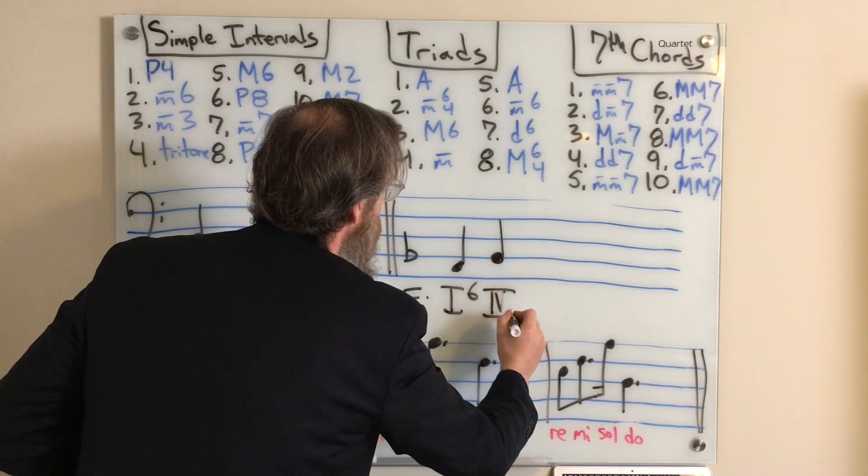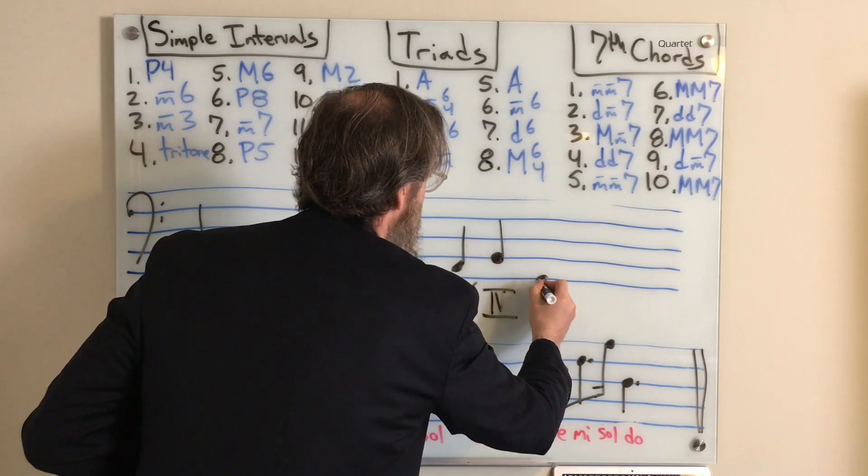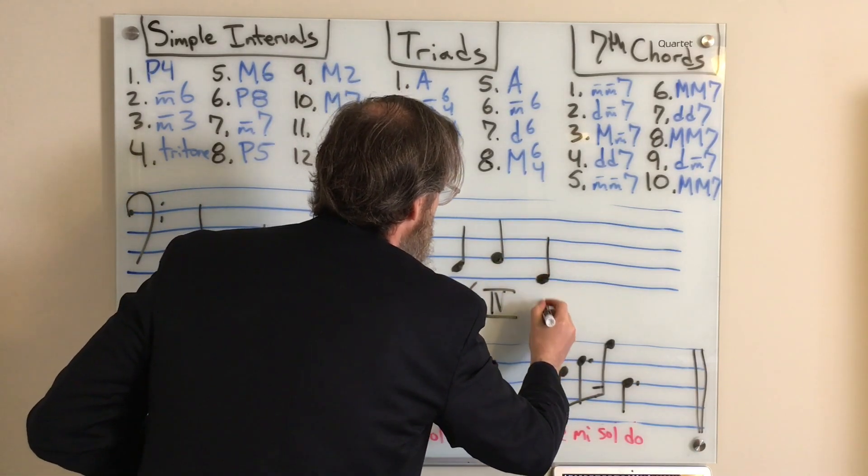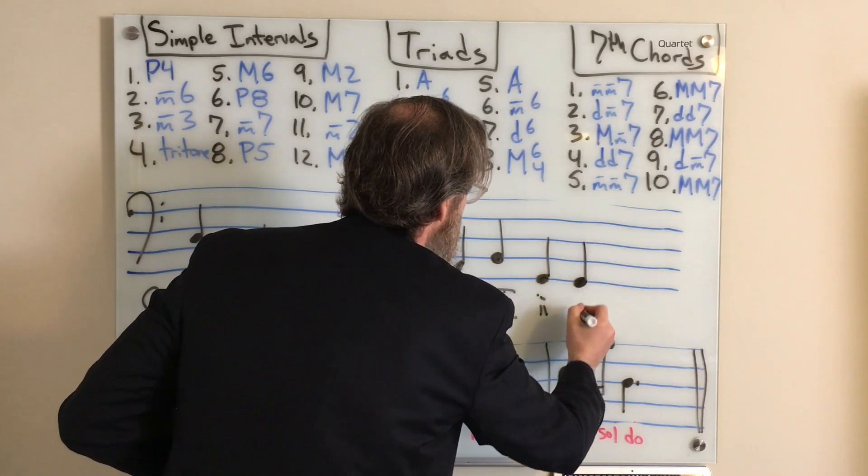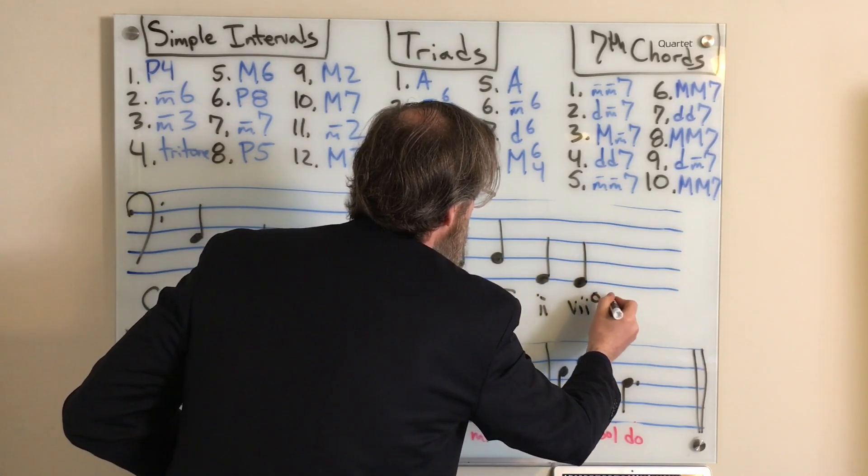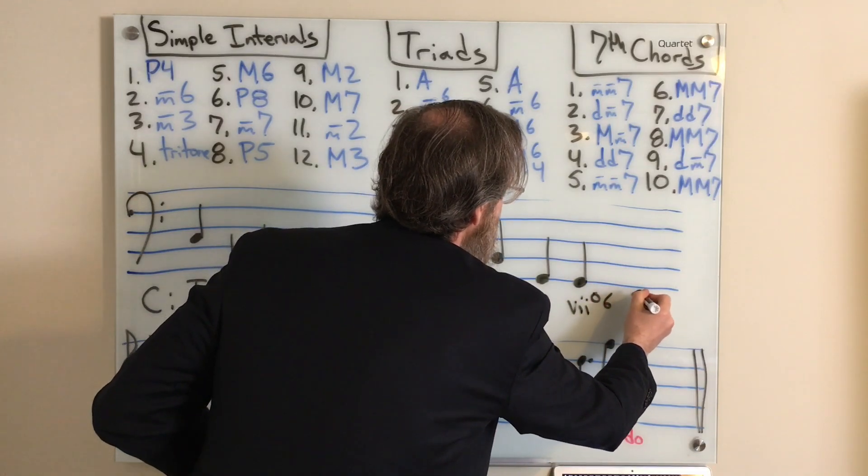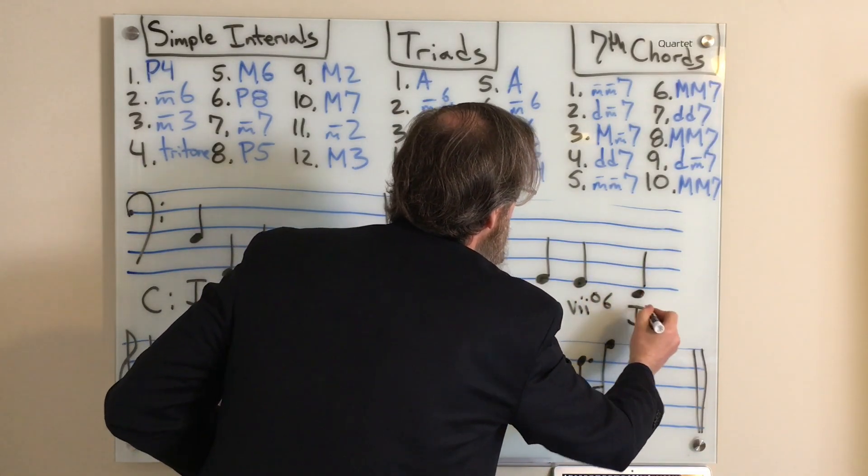The next note was a B-flat. It was a four chord in root position. Then we have a G, a two chord in root position, followed by another G, a seven diminished triad in first inversion, and ending with an F, a one chord in root position.